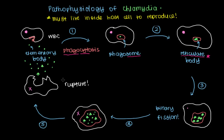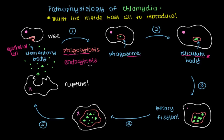Another variant of this cycle is instead of a white blood cell swallowing the elementary bodies, you might have an epithelial cell — like the epithelial cells lining the vagina or the urethra — swallow the elementary bodies by a process known as endocytosis, which is really just an umbrella term for phagocytosis. Phagocytosis is a type of endocytosis. This produces an endosome, and the rest of the cycle is all the same, including the very unfortunate outcome. This is how chlamydia spreads from cell to cell and makes its way further up the genital or urinary tract.